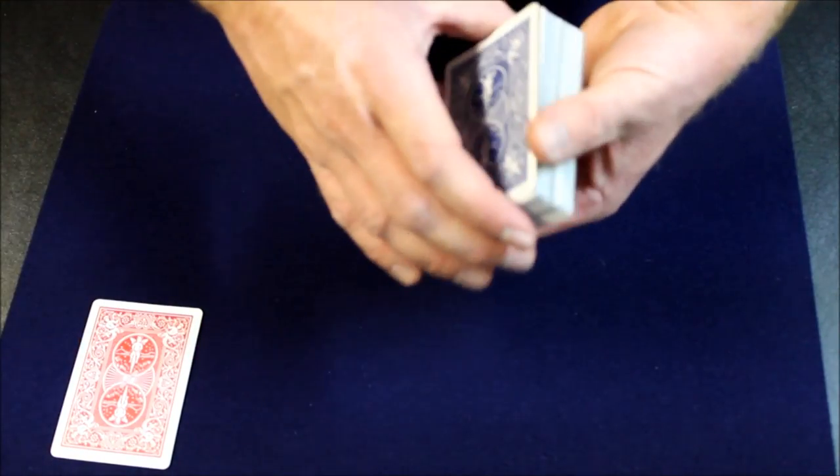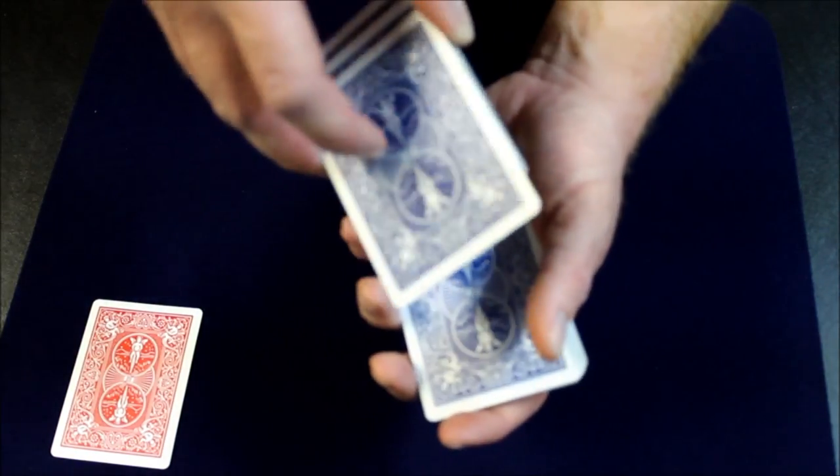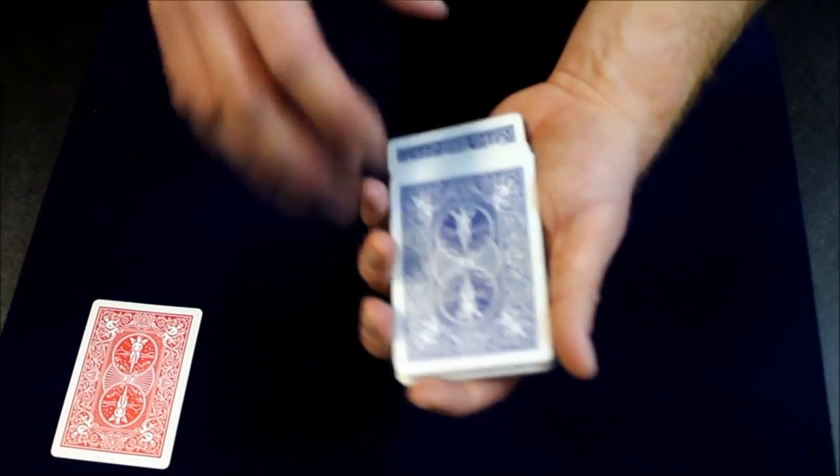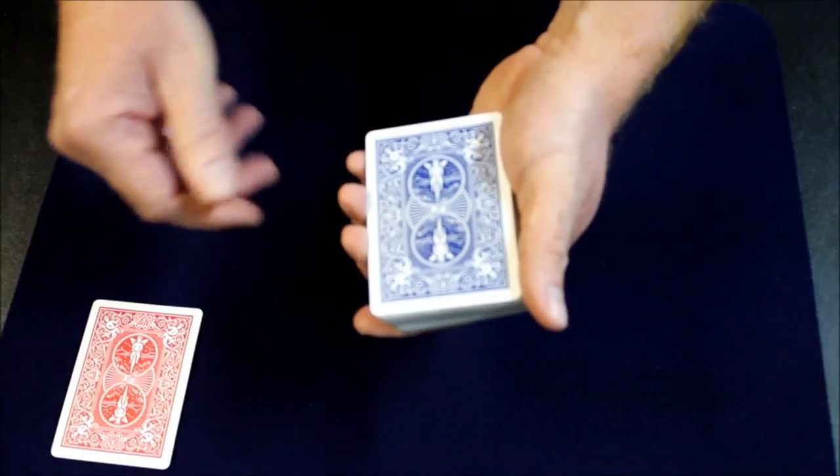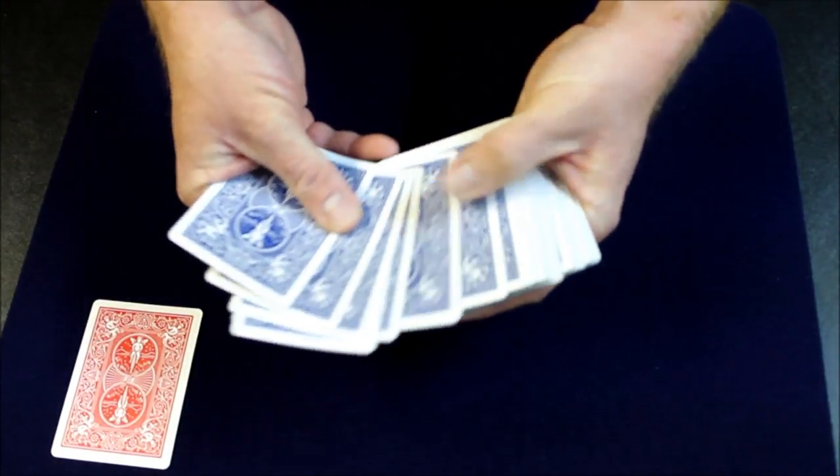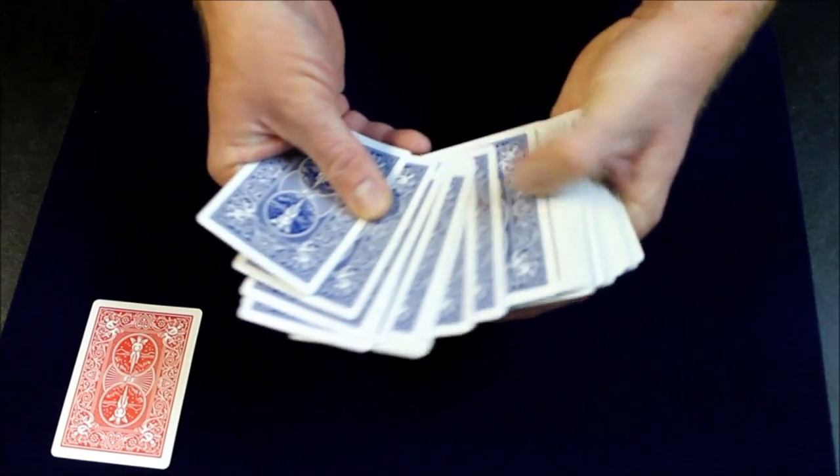So we'll put that off to the side for now and we'll have a second card selected. So let's say stop. Okay so the bottom card, that's their card, remember that. And we're gonna drop that into the middle of the pack. Now again, with a quick wave and a snap you'll see that another card turns red.